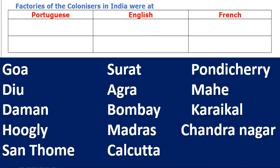Now let us know the factories of the colonizers in India. The colonizers were Portuguese, English, French, and also Dutch — but Dutch left India earlier. Portuguese had factories at Goa, Diu, Daman, Hooghly, and Santhome.